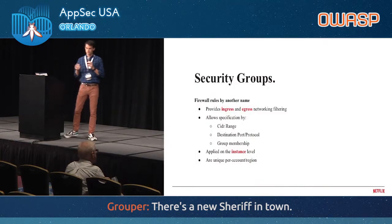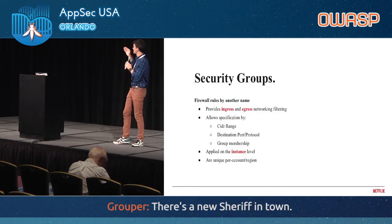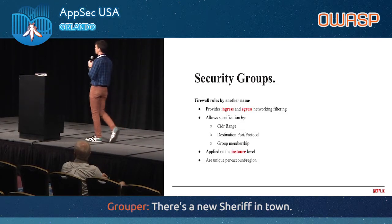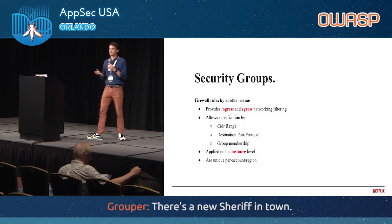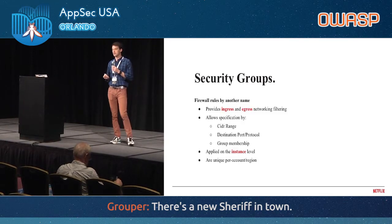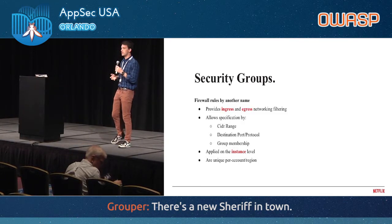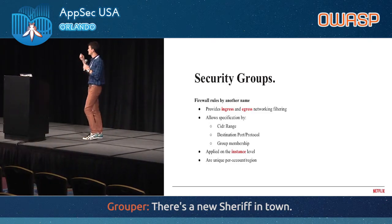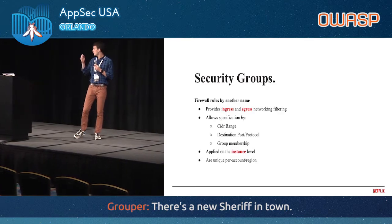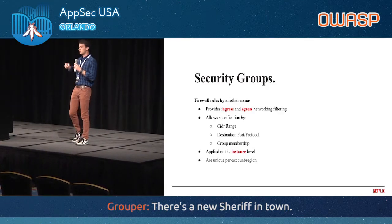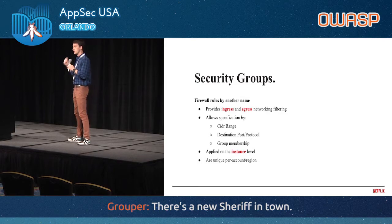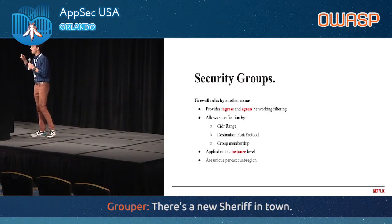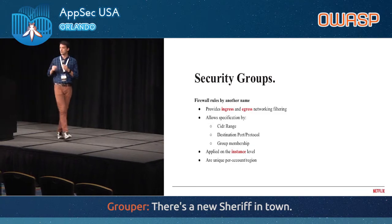So what are security groups? Essentially, security groups are just firewall rules by a different name. You can think of them in relatively the same context as any other firewall rule, restricting access from one application server to another on a networking level. This provides ingress and egress network filtering by CIDR range, by IP, by port, and it also has this idea of group membership.